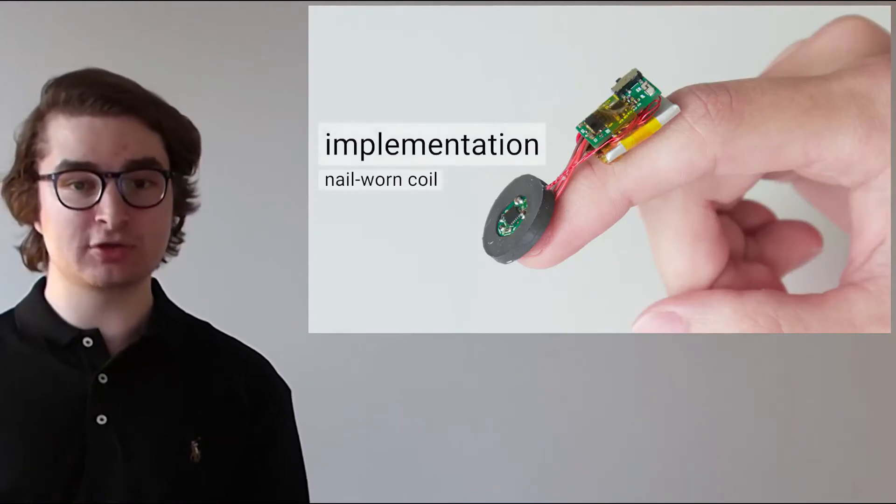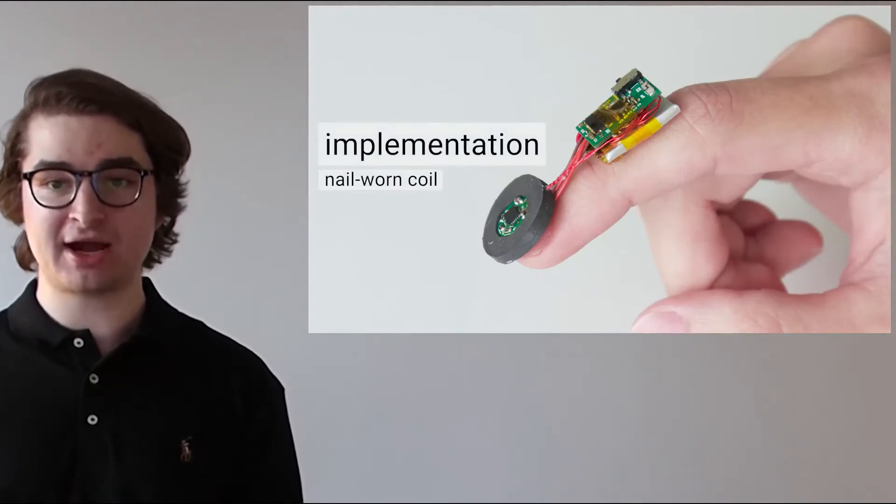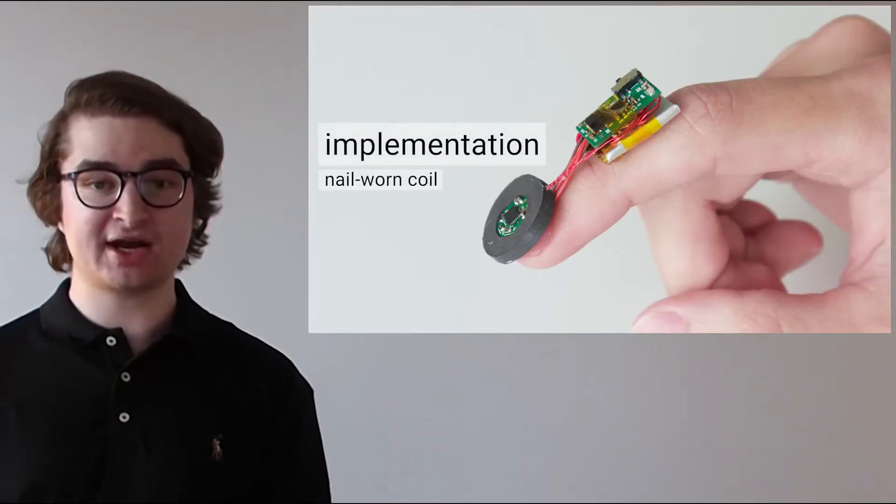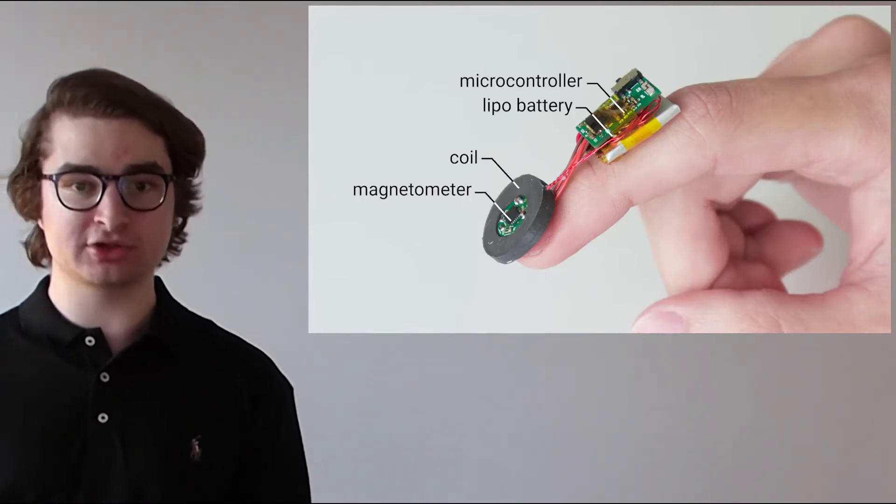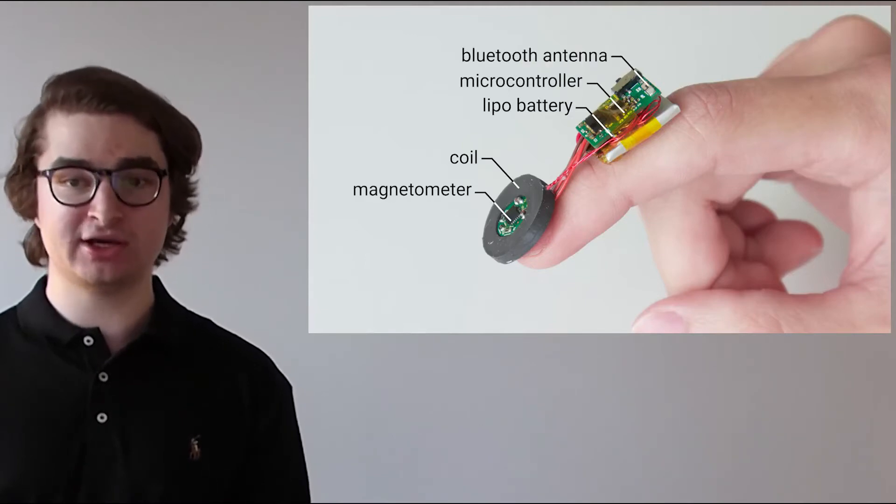I'll now detail how we implemented this actuator, beginning with the nail-worn coil, which acts as a wearable power source. This has an IMU with magnetometer, the coil itself, a LiPo battery, microcontroller, motor driver, and Bluetooth.